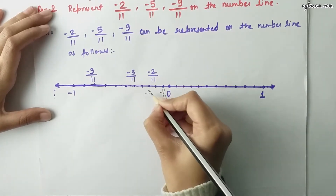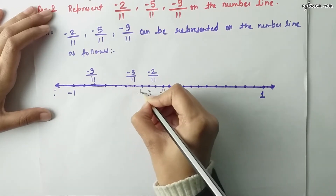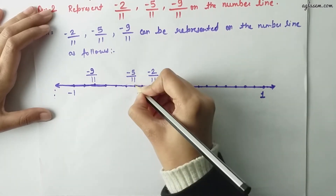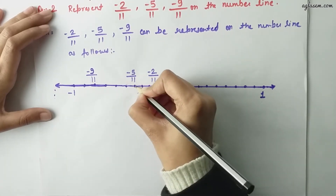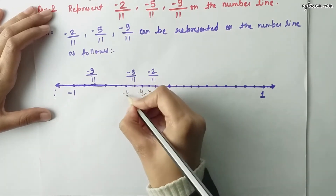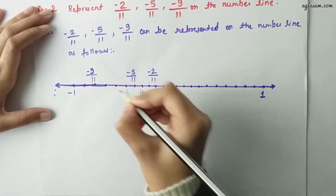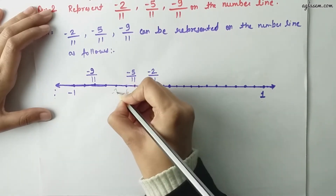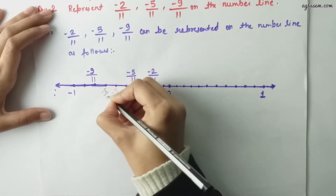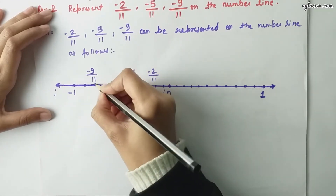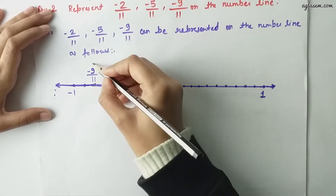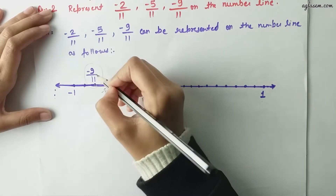Minus 3 by 11, minus 4 by 11, and minus 5 by 11 lies here. Minus 6 by 11, minus 7 by 11, minus 8 by 11. So minus 9 by 11 lies here on the number line.